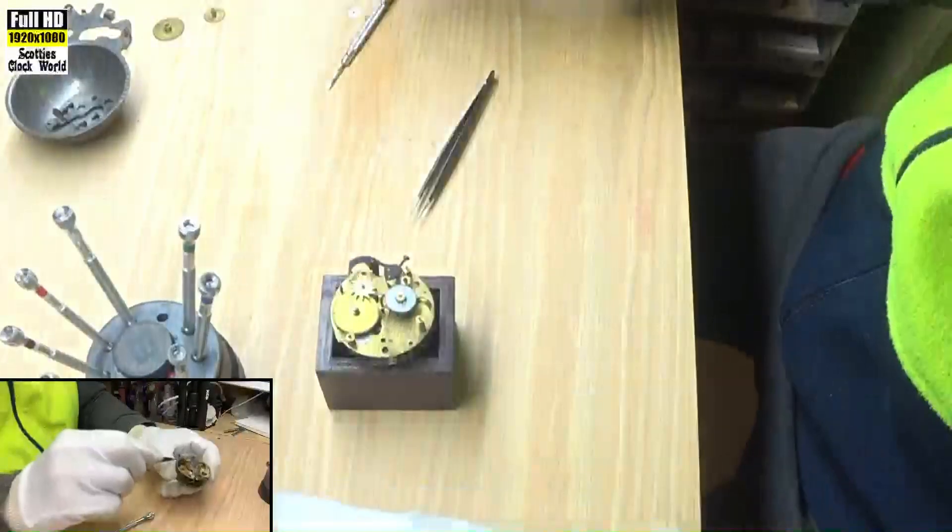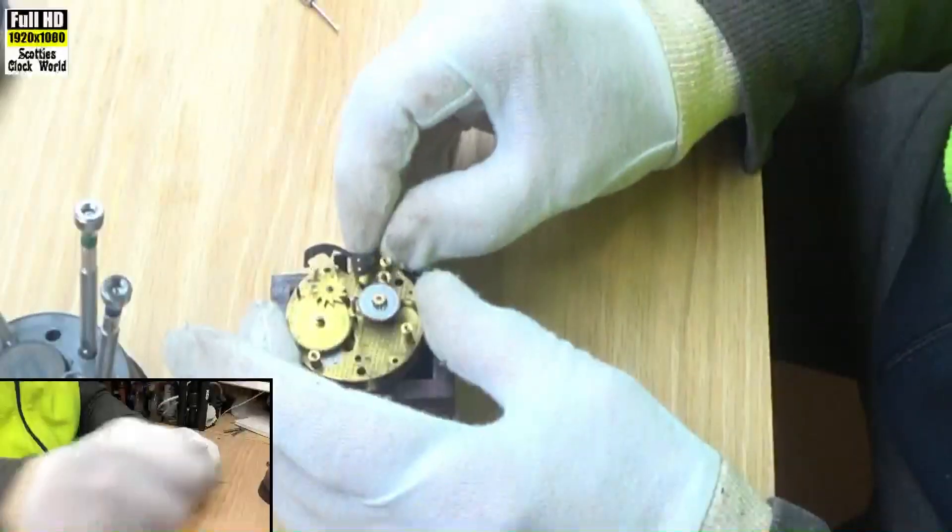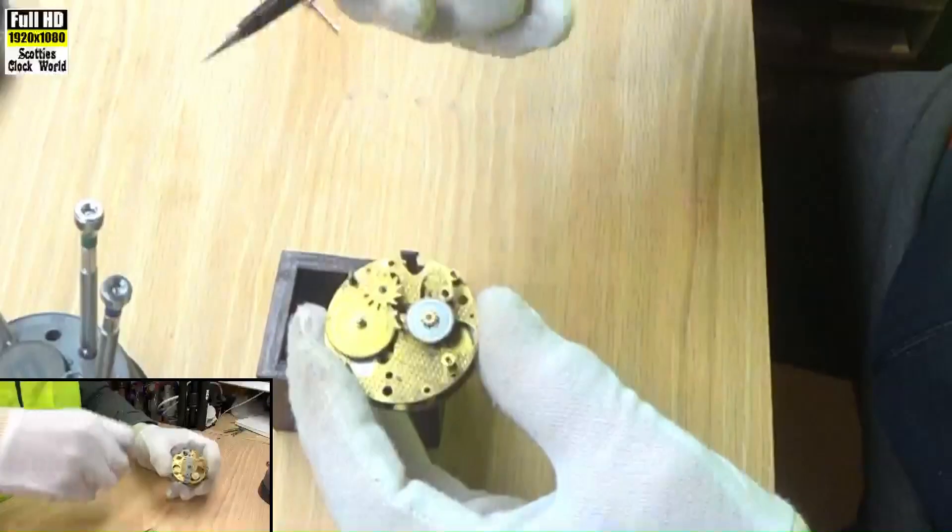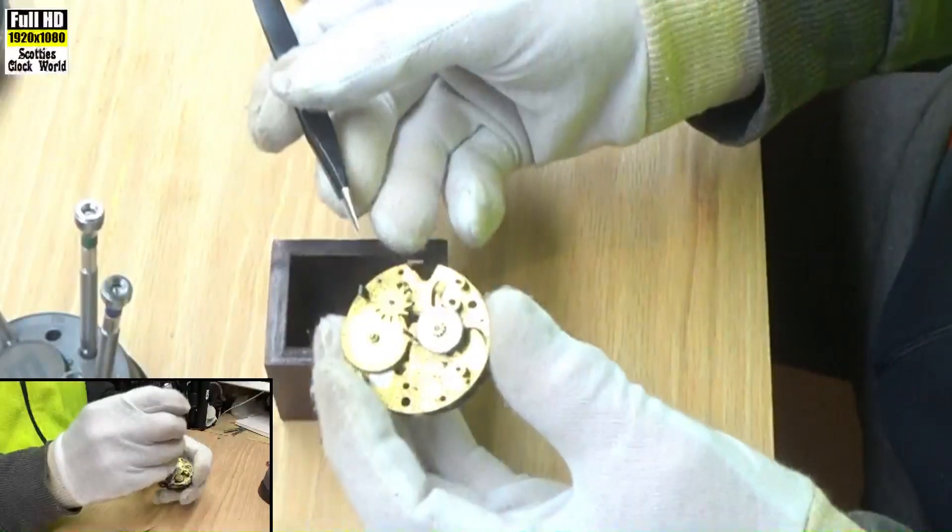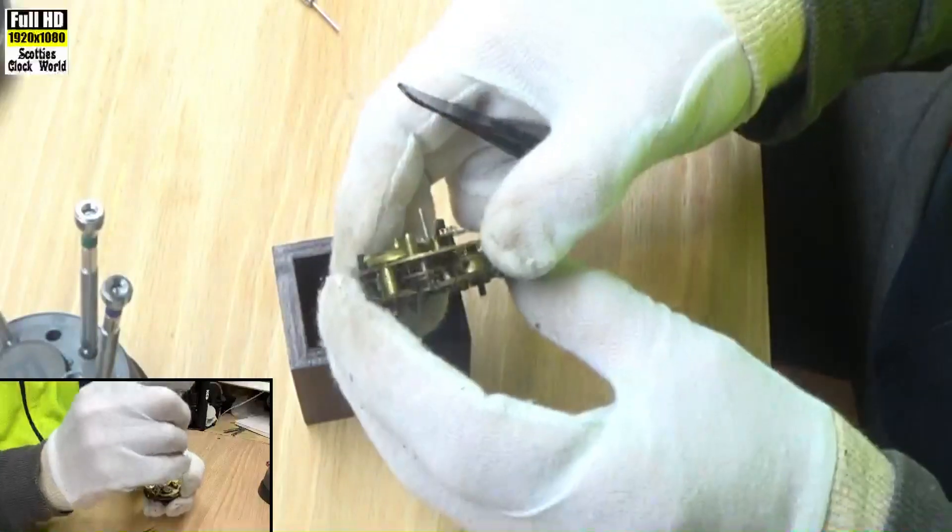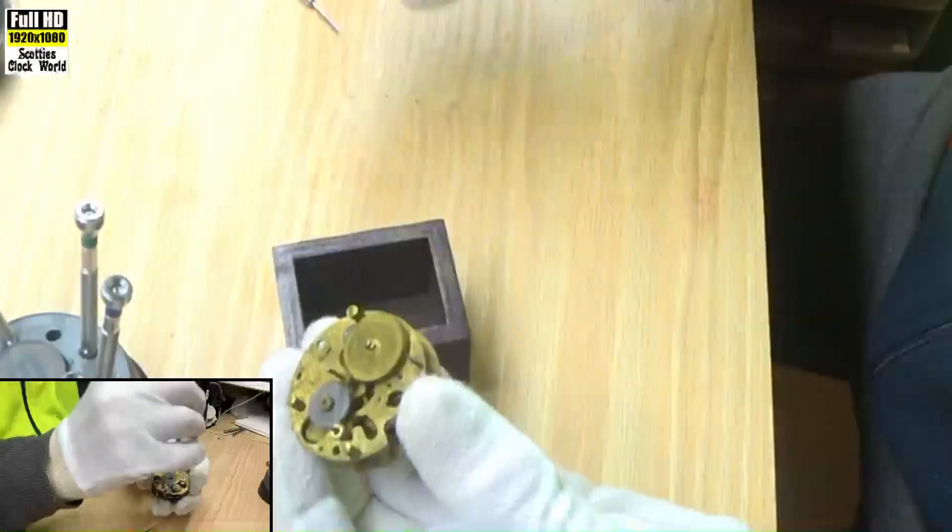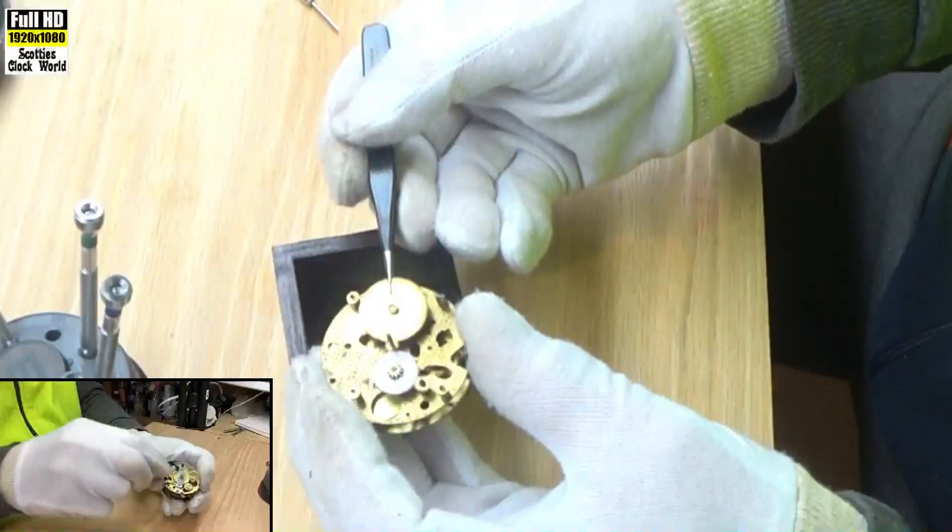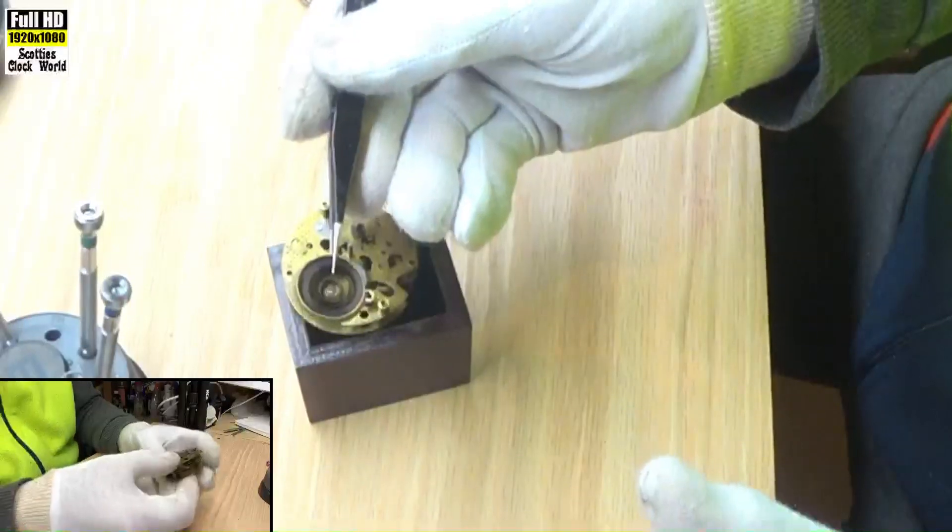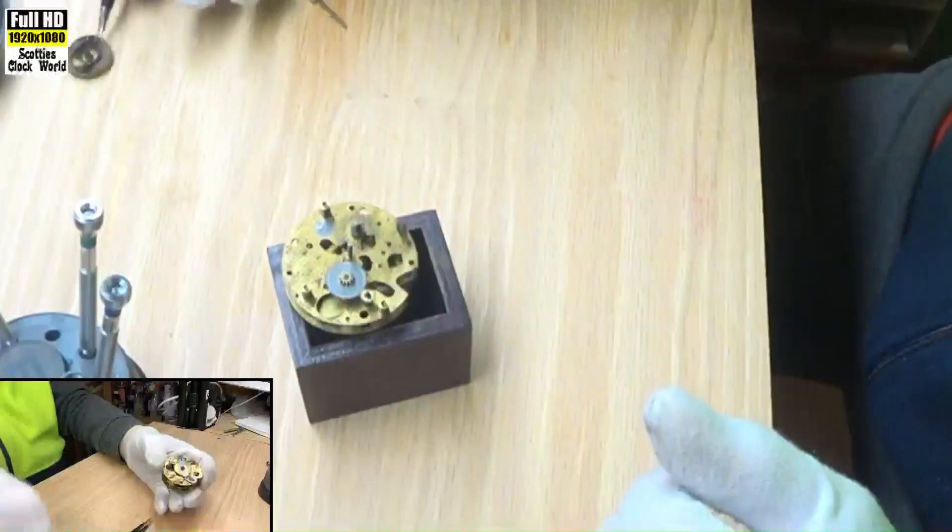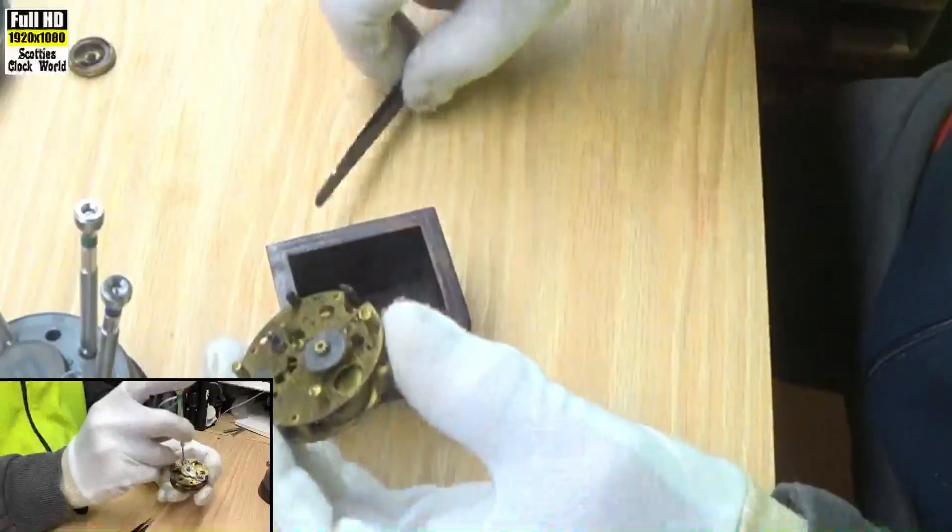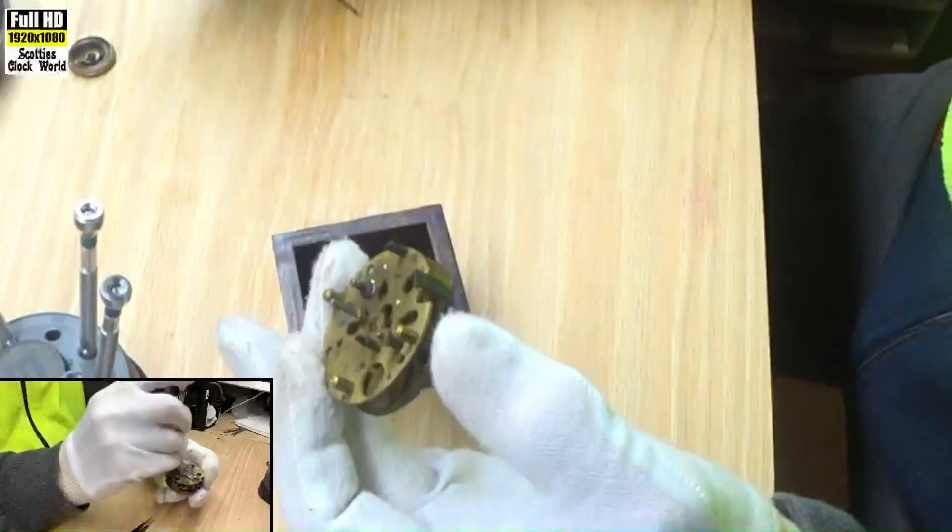Put all that over there. That's the alarm counter. Take that off. The star wheel. That's the spring barrel with a tiny little spring in it. Take that off.